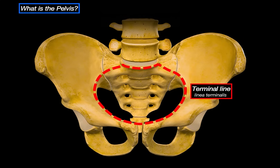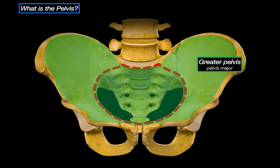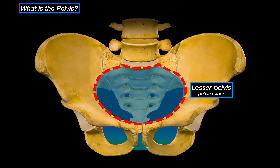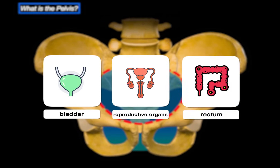This ridge forms the pelvic inlet. Everything above the pelvic inlet is referred to as the greater pelvis, also called the false pelvis, which supports abdominal organs like the small intestines and the sigmoid colon. Everything below the inlet is called the lesser pelvis, also known as the true pelvis, and it contains the bladder, reproductive organs, and rectum.